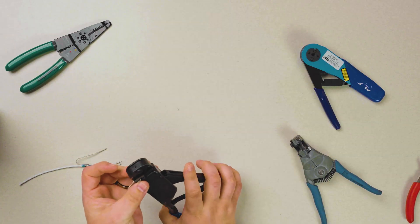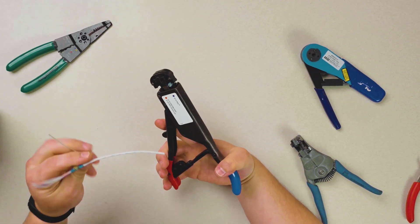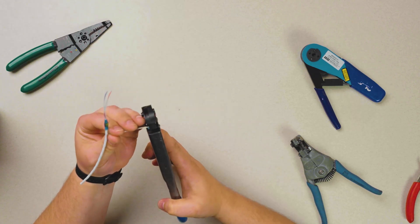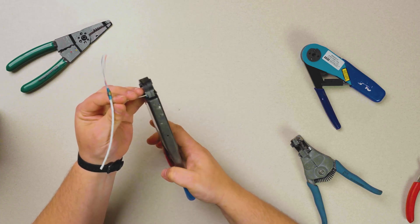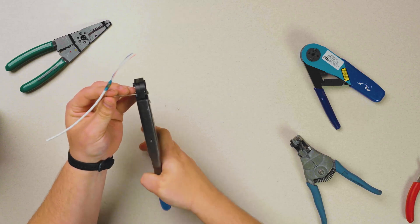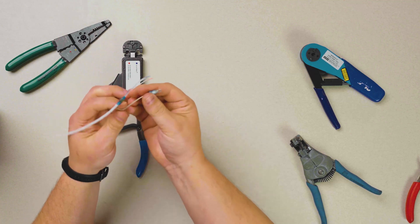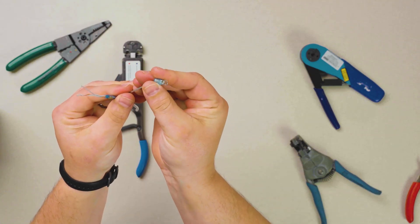When we utilize the automatic ratcheting style crimping tool for our ring terminals, again we establish that the shielding is all the way penetrated through. Position it correctly. And we can see we have maximum engagement and there's very little, if any, deformation.